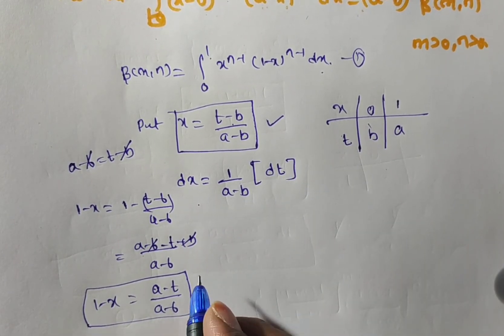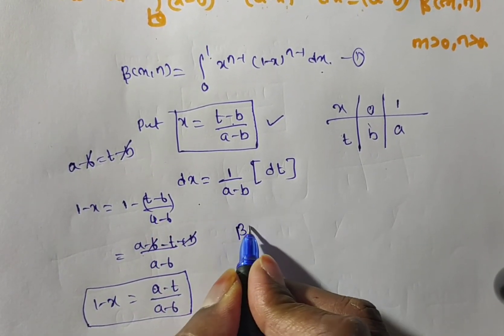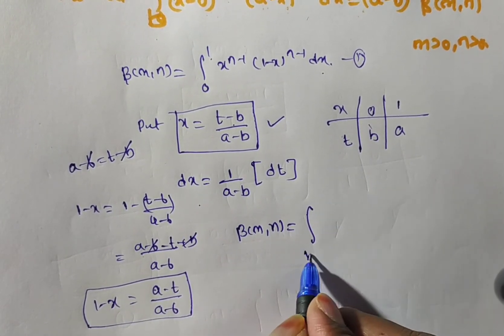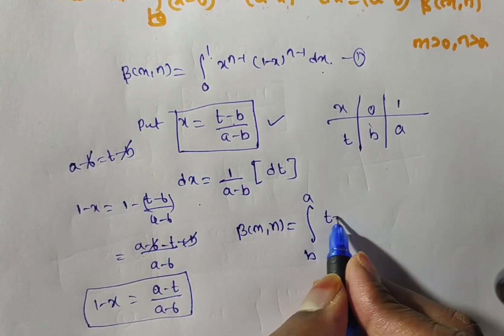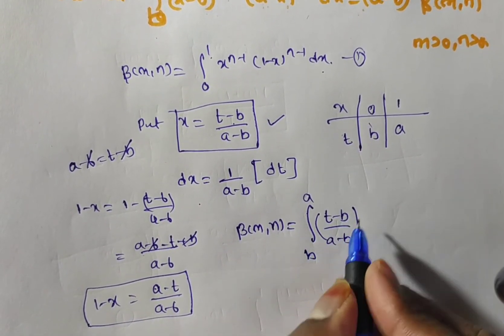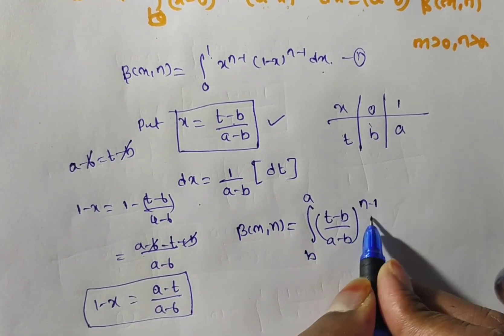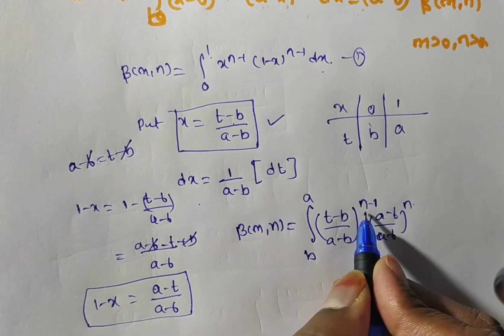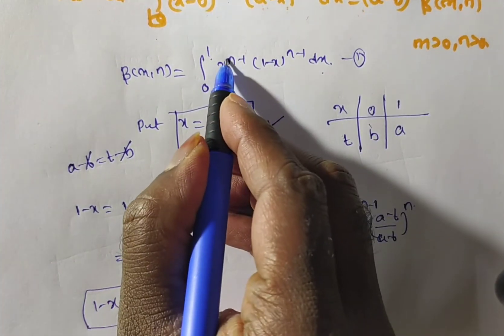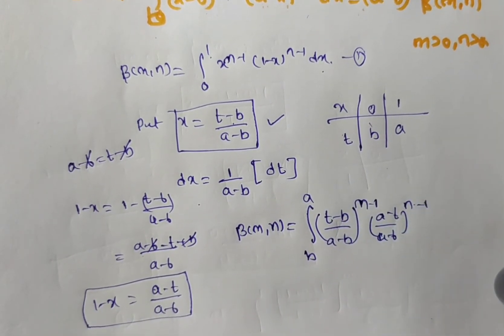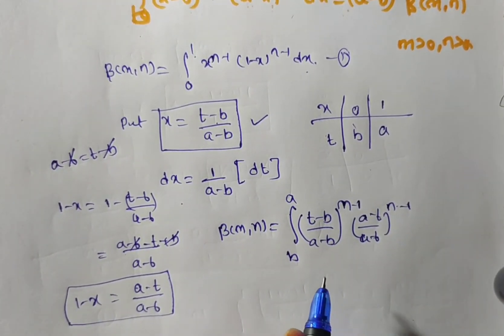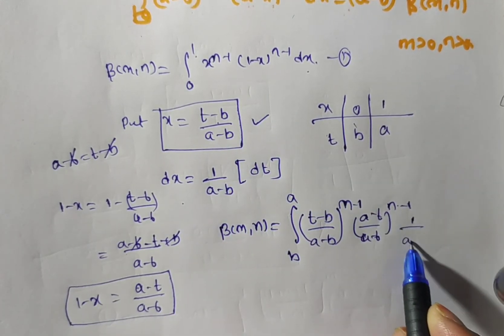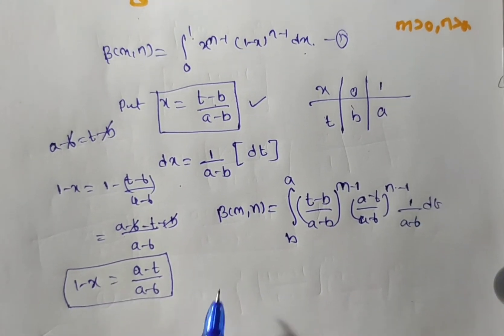So we now have 1 minus x, x, dx, and the limits. Substitute in equation number 1. Beta of m comma n equals integral from b to a of (t minus b) by (a minus b) to the power m minus 1, times (a minus t) by (a minus b) to the power n minus 1, times (1 by (a minus b)) dt.